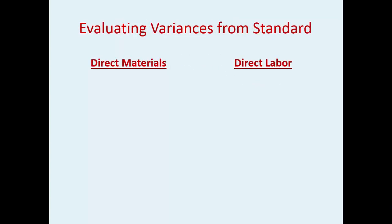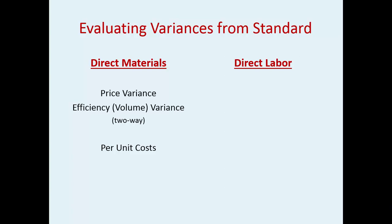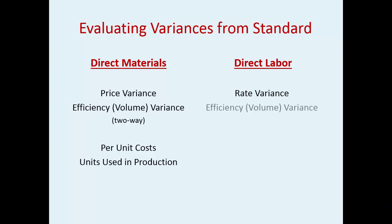Evaluating the variances from the standards: direct materials will have a price variance and an efficiency variance — that is a two-way. You look at per-unit cost for the price variance and how many you actually use in production — that's your efficiency. With direct labor, you could have a rate variance and an efficiency variance, which is another type of two-way.